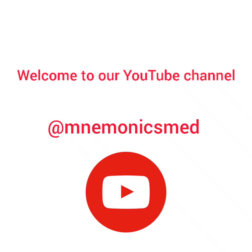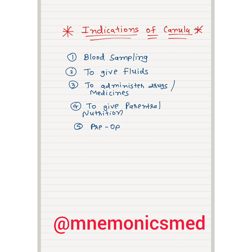Hello guys, welcome to our YouTube channel Manomics Med. Today we will learn about the cannula. Indications of cannula: it can be used for blood sampling, to give fluids to the patient, to administer drugs and medicines, to give parenteral nutrition, and it can also be used pre-operatively in the surgical theater. You have to remember these indications of cannula.